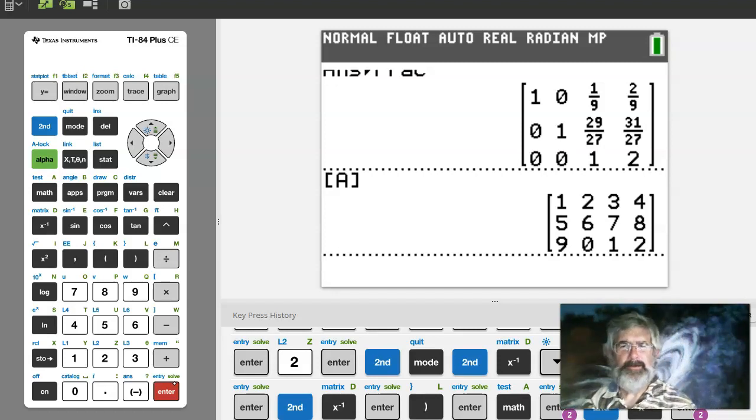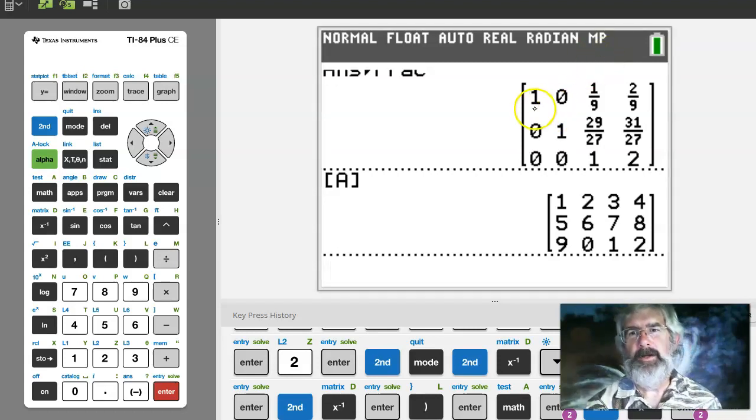This is not the row echelon form I would have gotten if I had done it by hand, because with a 1 already in that upper left hand corner I would have just left the first row alone and started changing the second and third rows. But look at the first row that they have up here.